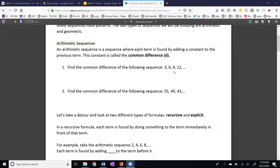If we take a look at number 2 here, it's asking for the common difference. What number is being added to 55 to get 49, and the same number is being added to 49 to get 43. The number that you add to 55 to get 49 is negative 6.